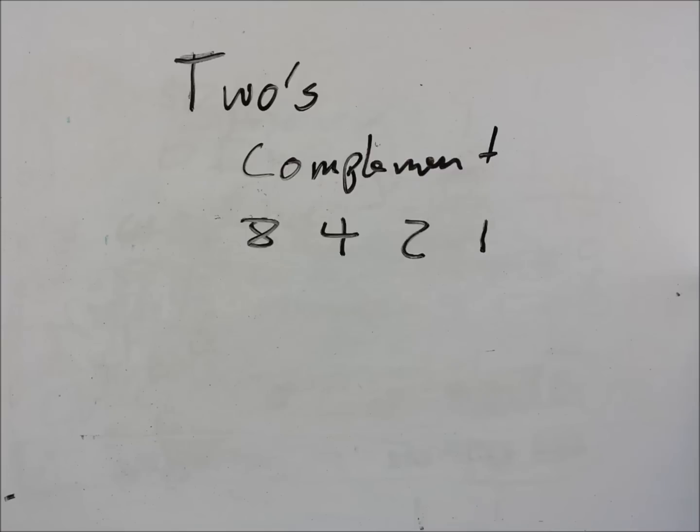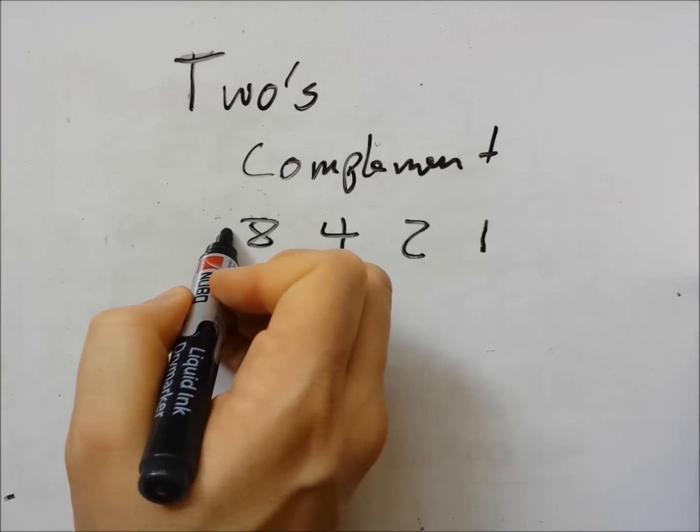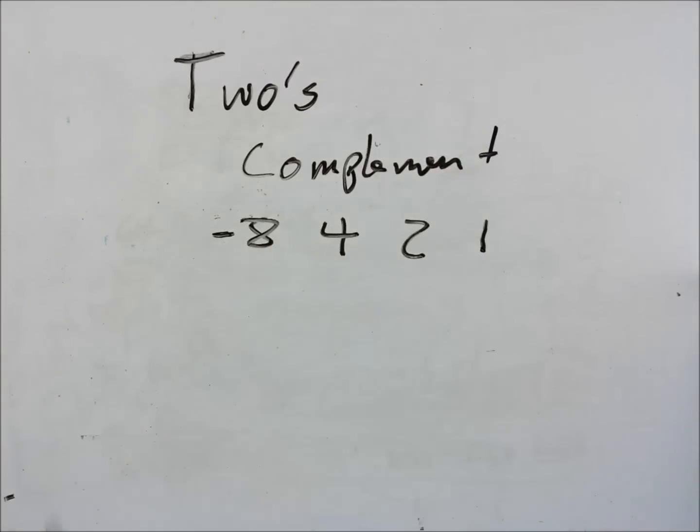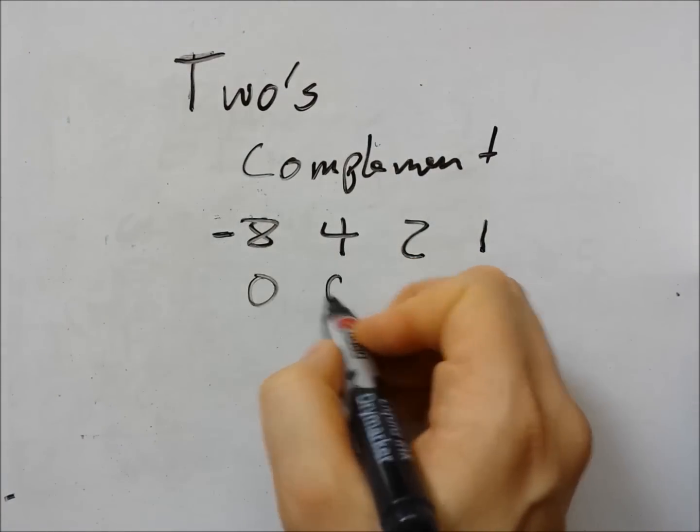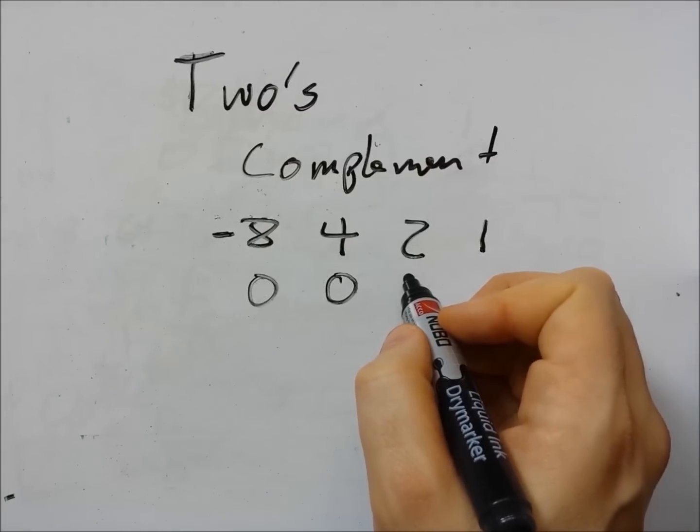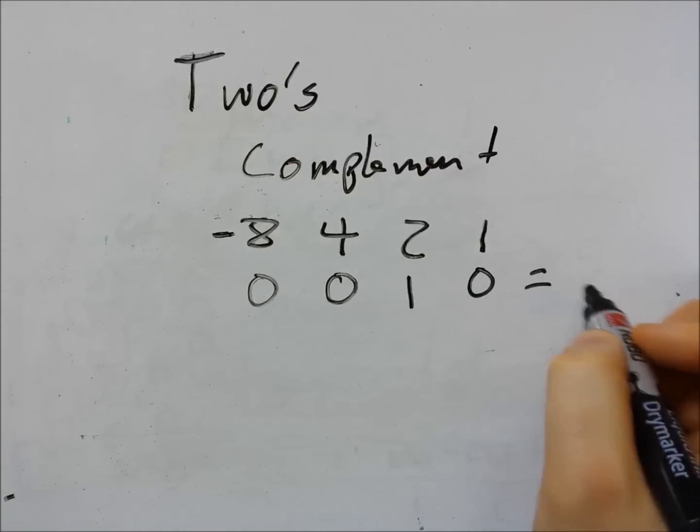In two's complement we add a negative sign here. So this column becomes minus eight. This means that to say two you say zero, zero, one, zero. That is equal to two.